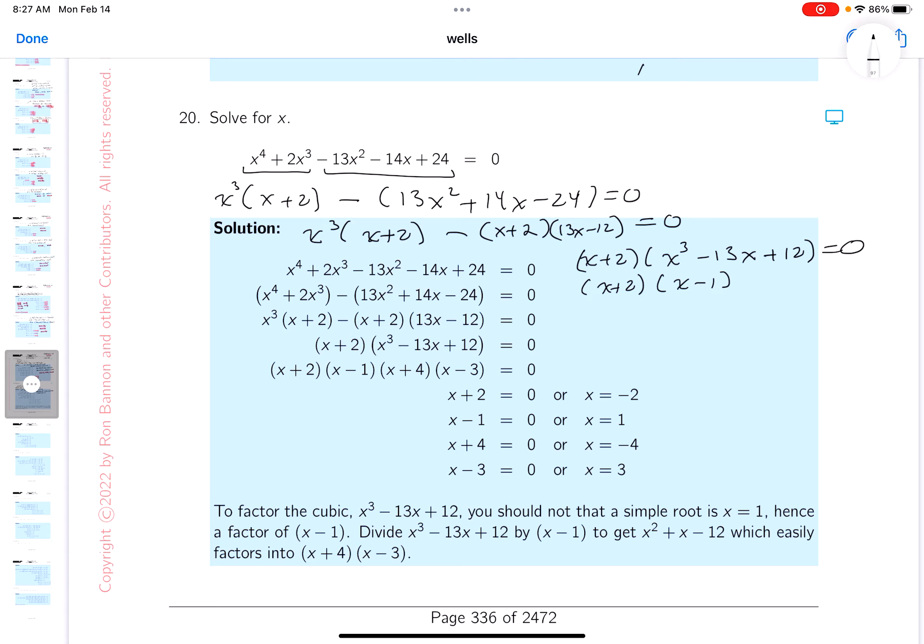Now, what I would do is I would divide x minus 1 into x cubed minus 13x plus 12. Again, it's a more difficult factoring problem. But, again, I'm not saying it's difficult for everyone. Like some of you say, I wouldn't divide there. I would just try another rational root. Well, I'm going to try this.